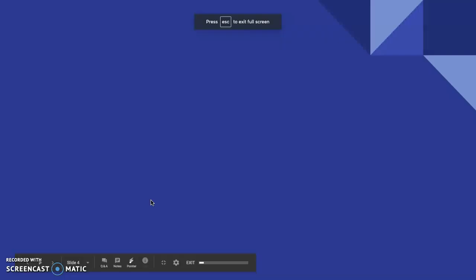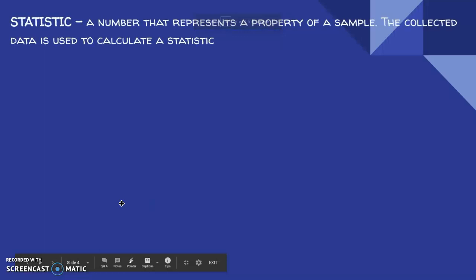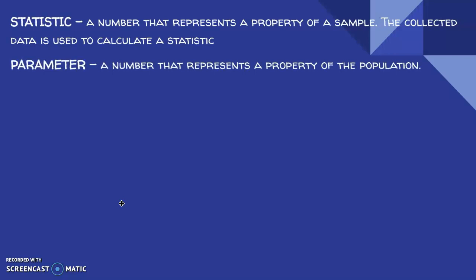Some more vocab here. This class is called statistics, but there actually is a definition for the word statistic. It is a number that represents a property of a sample. So that property could be a lot of things - it could be an average, it could be a proportion, it could be any sort of describing characteristic of the data. But it comes from the sample. The collected data is used to calculate a statistic. On the other hand, a parameter is basically the same thing, but it doesn't come from a sample. It comes from a population. So a parameter is a number that represents a property of the population.